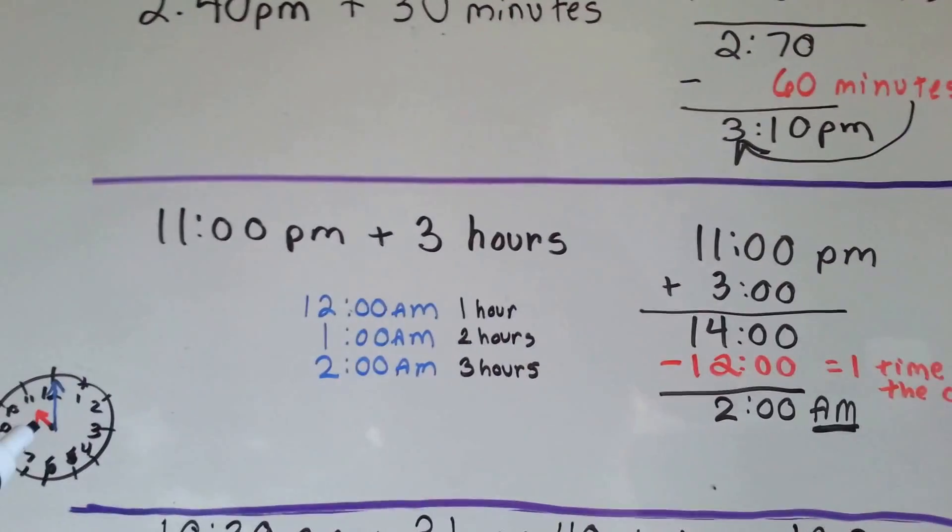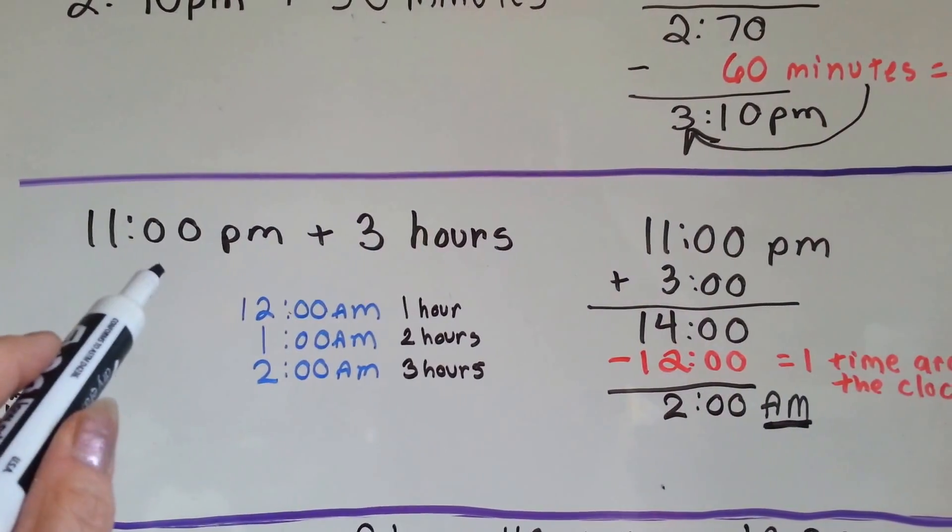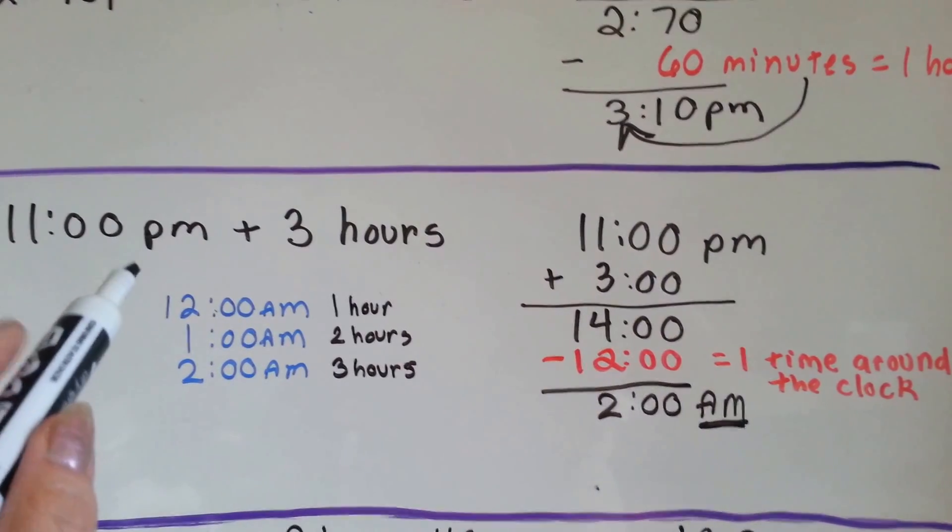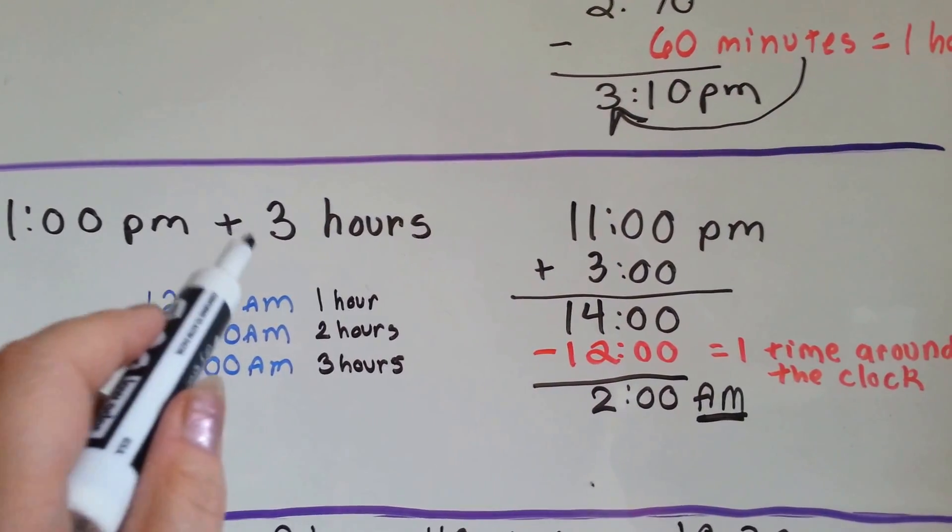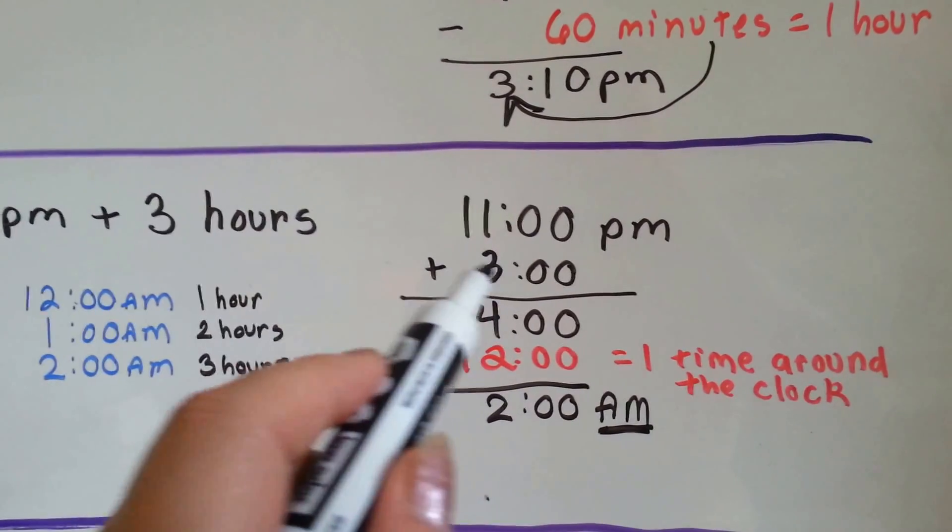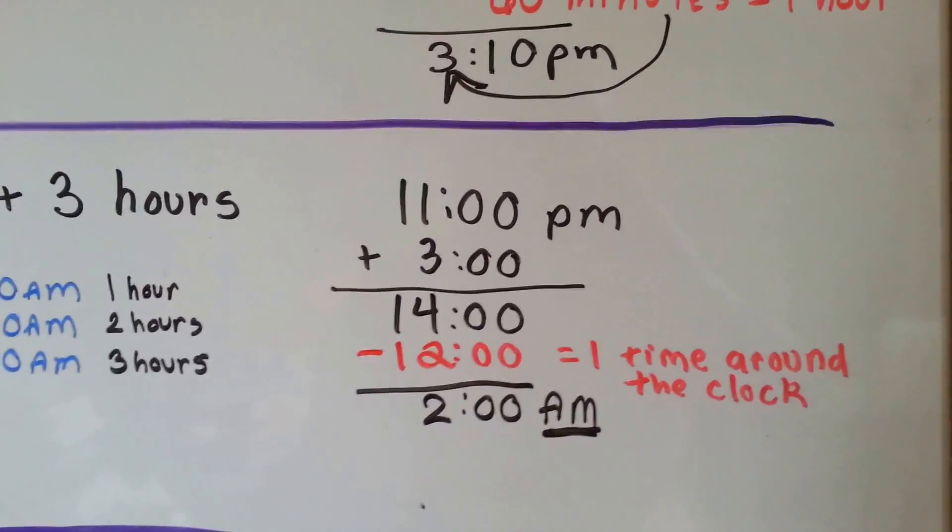It's 11 o'clock at night. 11 PM. It's almost an hour from midnight. It's PM. 11 o'clock PM plus 3 hours. We're going to add the 3 hours, and we're going to get 14 o'clock. Well, there's no 14 o'clock.